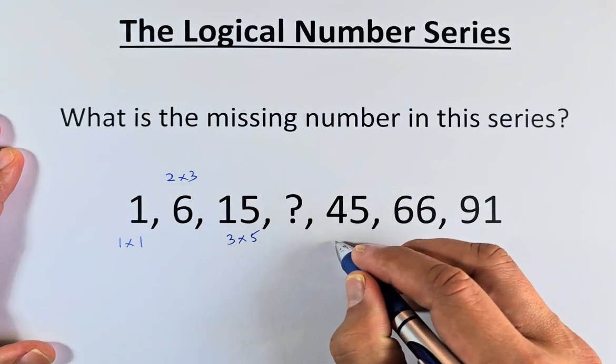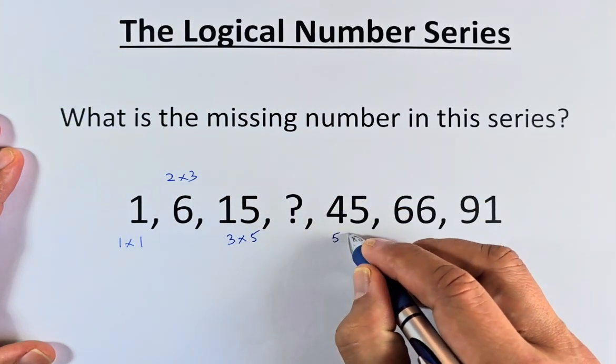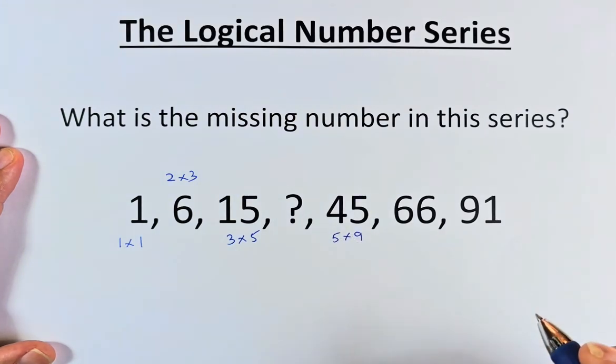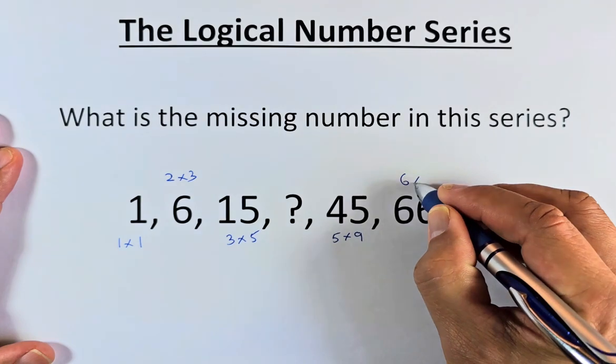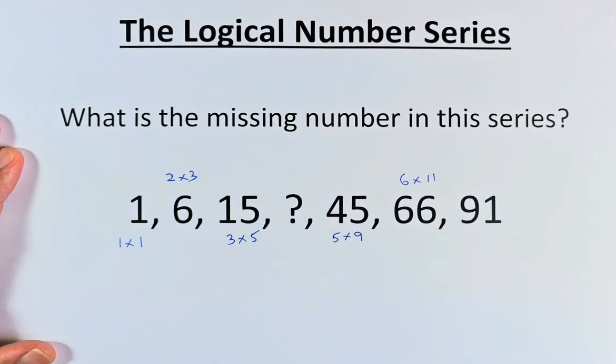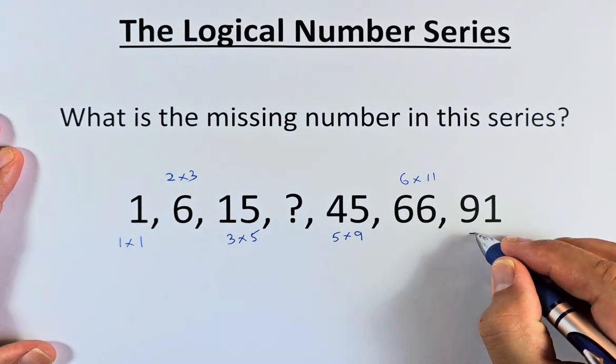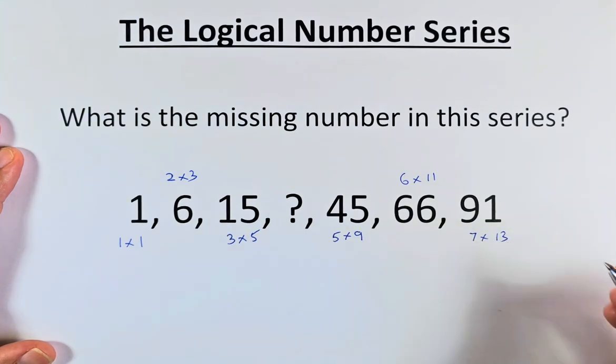45 is going to be 5 multiplied by 9. 66 is going to be 6 multiplied by 11. And 91 is going to be 7 multiplied by 13.